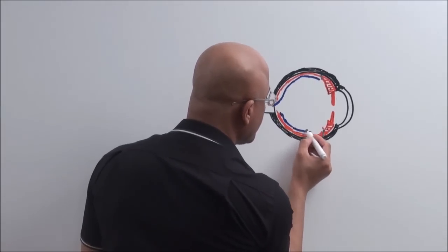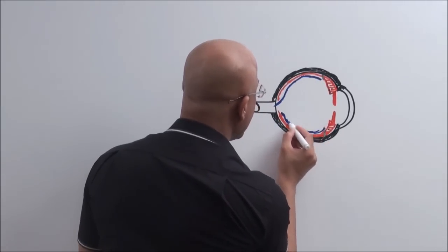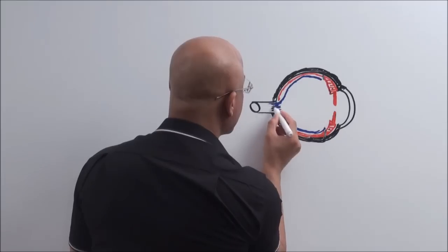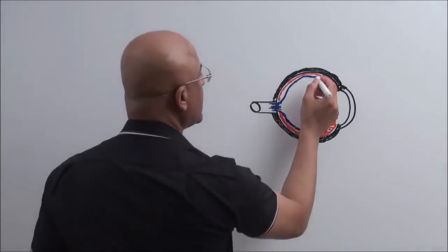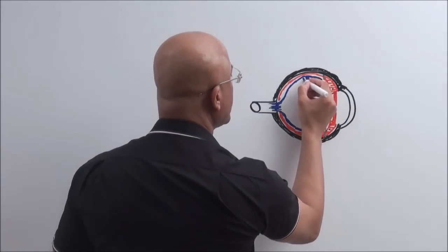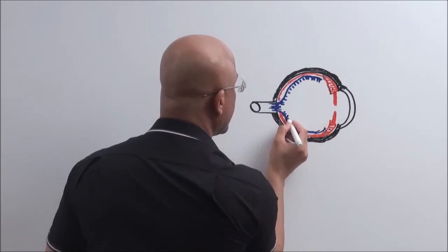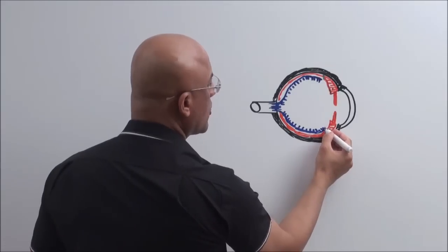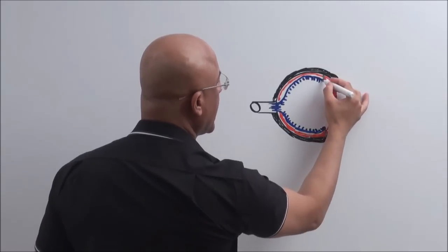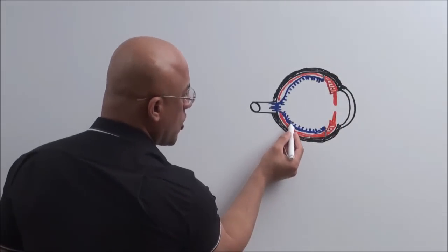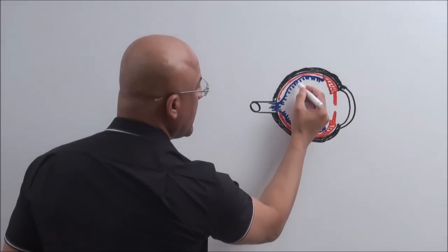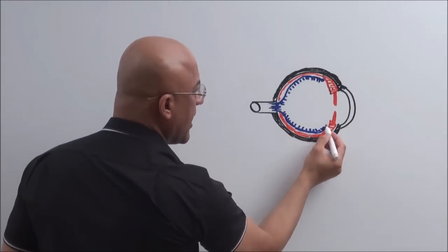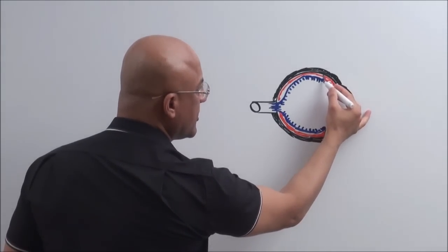Inside the uveal tract there is the retina. The retina has a part with a lot of rods and cones. There is a point of the retina where the rods and cones terminate abruptly, and this point is called the ora serrata.